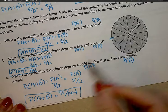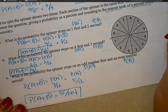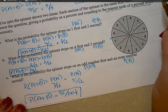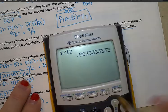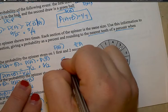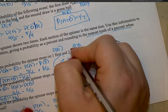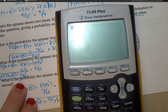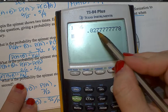Now going back, it says to give the probability as a percentage rounded to the nearest tenth. So let's turn these into percentages. 1 divided by 12 gives 8.3%. And 1 out of 36 gives 2.8%.